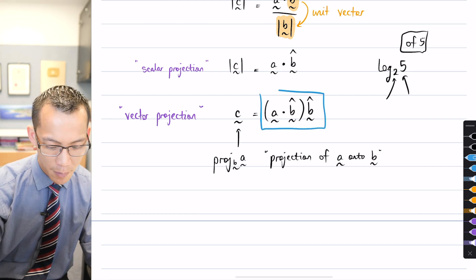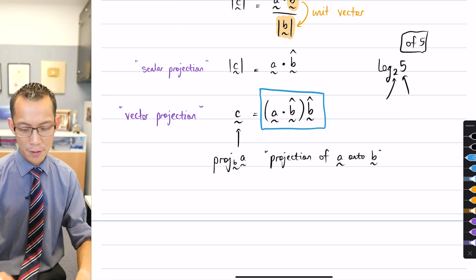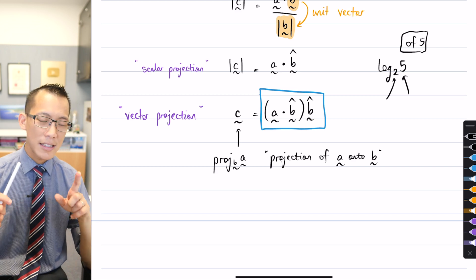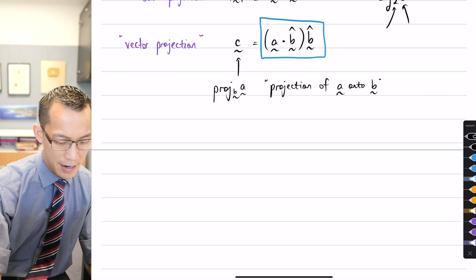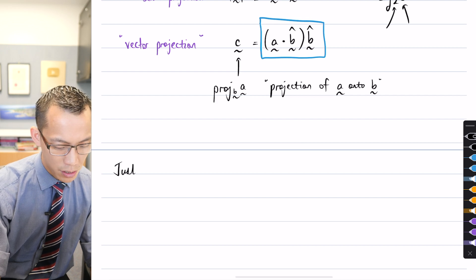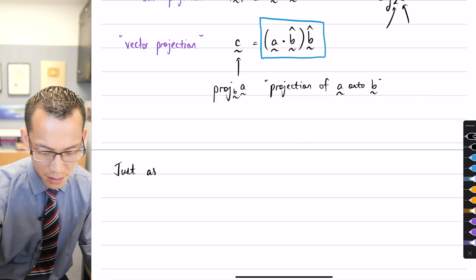This is the simplest formula for the projection, for the vector projection, but there's more than one way to write this formula. In fact, maybe we should just revise. We've also seen, actually I need a bit more space, sorry I'm going to move this down.